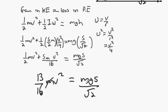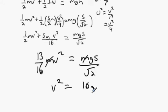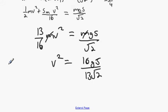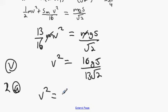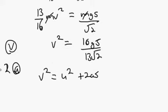Cancel the M's, then cross multiply. We get V² = 16GS over 13 root 2. It's a good idea to leave it in terms of V² because we'll use V² = U² + 2AS in the next step.